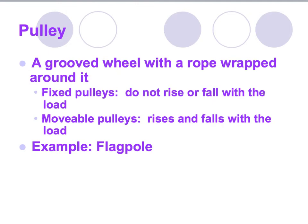We talked about pulleys in class today. A pulley involves a wheel with a groove along its edge where a rope fits so it doesn't slip off. There are two types. A fixed pulley is stuck in place and doesn't rise or fall with the load — examples include a flagpole or window blinds. A movable pulley rises and falls with the load, and is usually part of a series of pulleys that reduces the force needed.